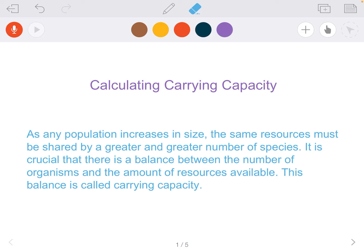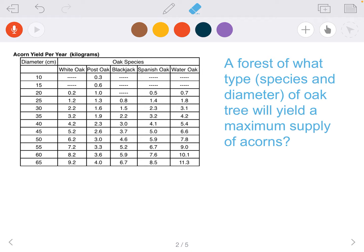I'm going to walk you through the steps and show you how to calculate carrying capacity for a forest and deer for our particular example. So this first question: a forest of what type, both the species and diameter, of oak tree will yield a maximum supply of acorns?